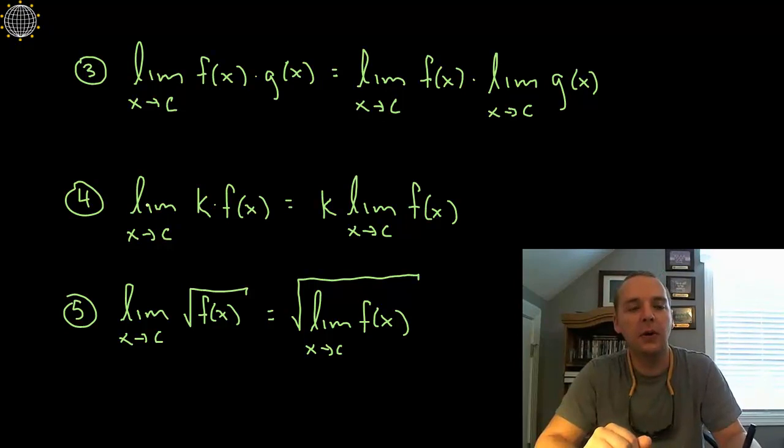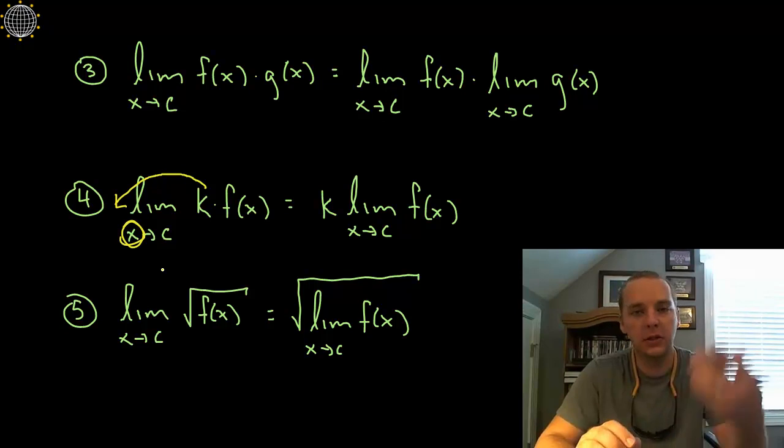This is an important one, number four. What do you do when you have a limit as x goes to c of some constant times a function? Or maybe you know the limit of what the function would give but this constant we're not really sure what to do with it. One important thing to realize is that constants that are multiples of functions can be pulled outside of a limit because it doesn't depend on this variable x and so it's allowed to be factored out or pulled outside of the limit.